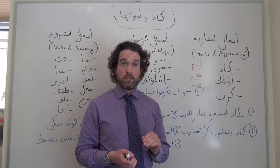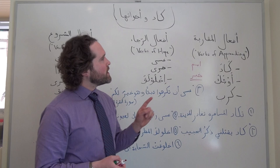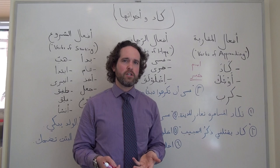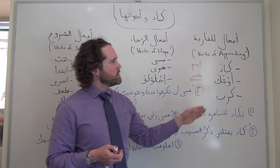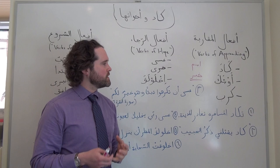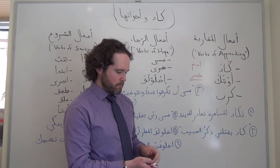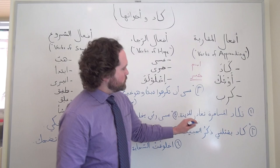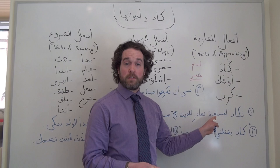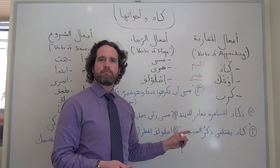So let's take a look at some examples. We have three categories of كَادَ وَأَخْوَاتِهَا. The first we call أفعال المقاربة, which we might gloss in English as verbs of approaching. All of these verbs are synonymous, meaning to be almost about to do, to be on the verge of. So here is one example: تكاد المسافرة تغادر المدينة — the female traveler is about to leave the city.